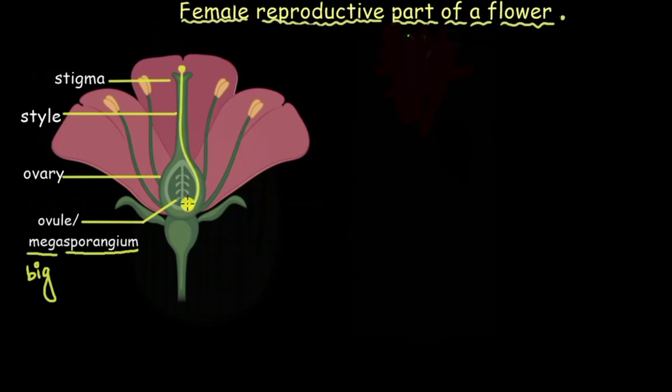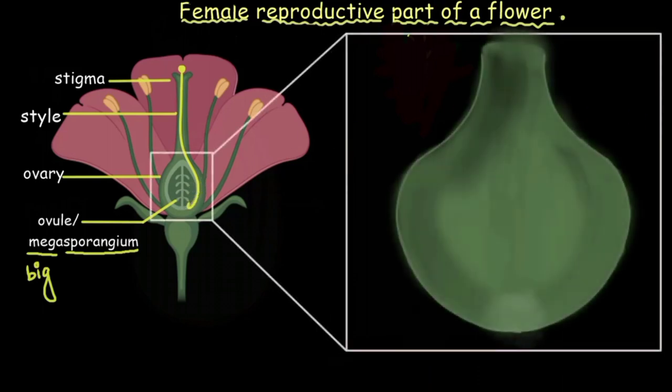Now to understand the fertilization better and to understand where exactly the fusion between the pollen tube and the ovule is taking place, we need to understand the structure of the ovule in detail right. So let us now zoom in to the ovary and we will look into just one of the ovule.